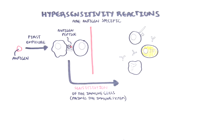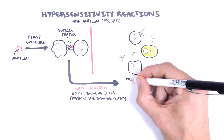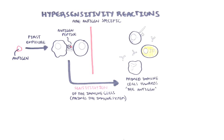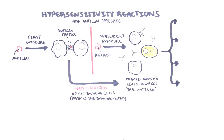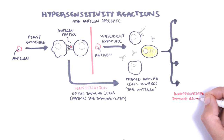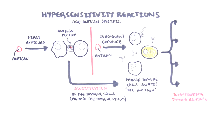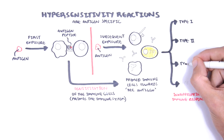So when the next time the antigen comes along, the primed immune system, including the T cells, antibodies, and neutrophils, can mount an exaggerated and inappropriate immune response, also known as a hypersensitivity reaction. The immune system can cause hypersensitivity reactions in different ways, which is why hypersensitivity reactions can be subdivided into four main types.